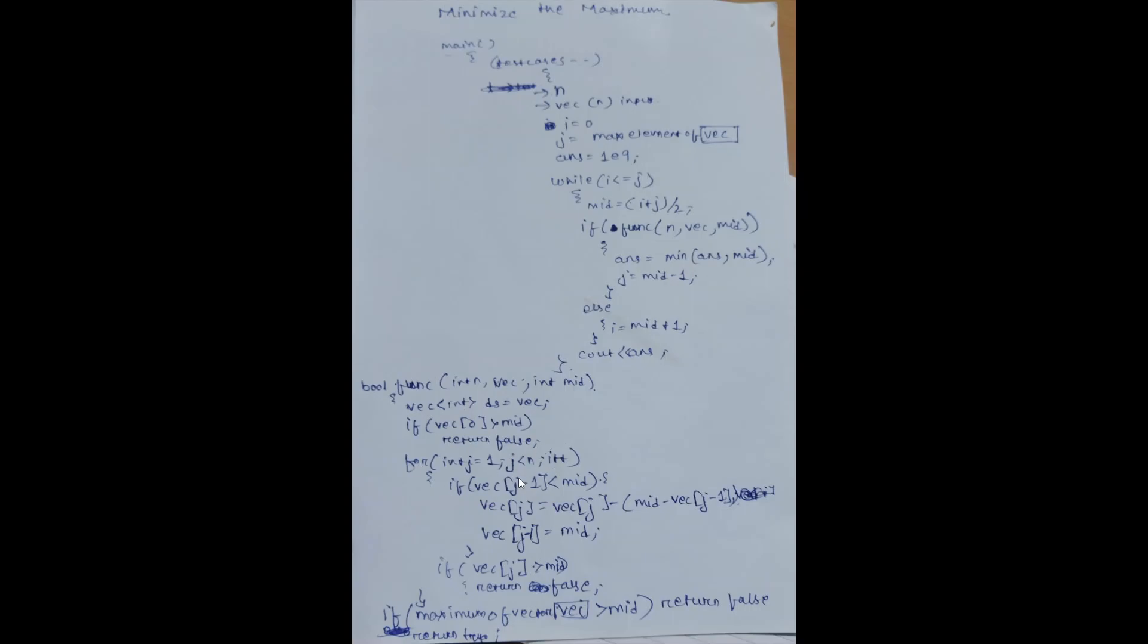We go on checking if the previous element is less than mid. If it is less than mid, then we change the current element to current element minus mid minus the previous element, and the previous element to mid. If the vector of j at that position is greater than mid, then we simply return false.